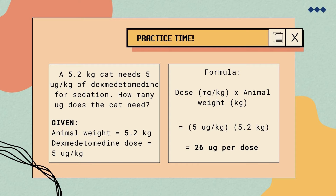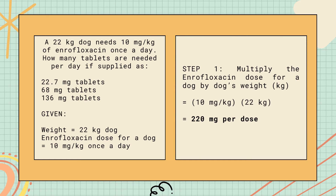Therefore, a 5.2-kilogram cat needs 26 micrograms of dexmedetomidine for sedation. Next problem: a 22-kilogram dog needs 10 milligrams per kilogram of enrofloxacin once a day. How many tablets are needed per day if supplied as 22.7 mg tablets, 68 mg tablets, and 136 mg tablets? Given: weight equals 22 kg; enrofloxacin dose equals 10 mg/kg once a day. Step 1: multiply the enrofloxacin dose by the dog's weight — 10 mg/kg times 22 kg equals 220 milligrams per dose.